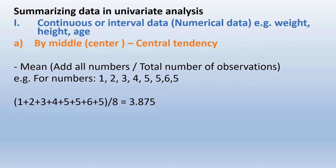We always get the mean by adding up the observations over the total number. For example, if we have 1, 2, 3, 4, 5, 5, 6, and 5, to get the mean — or on average — you get the total over N.